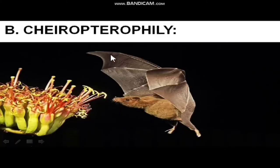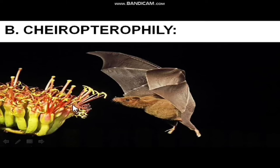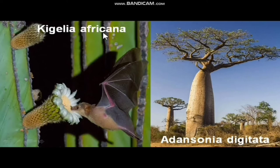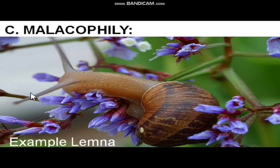The next is chiroptophily. As you can see in this picture, bats are also helpful in pollination like birds. But bats are active at night, so these flowers have no need of color. Instead, they want a scent — the smell should be very appealing so that the bat can fly and come towards the flowers. The flowers which completely depend on bats for pollination are Thilachium africana and Adansonia digitata.